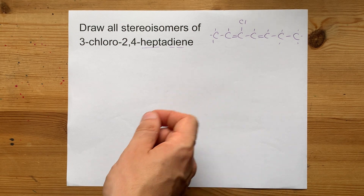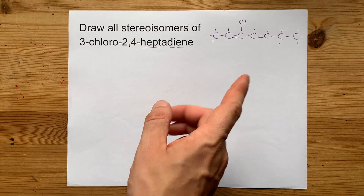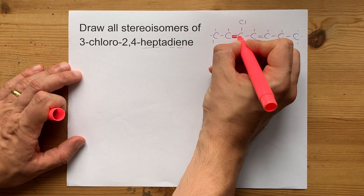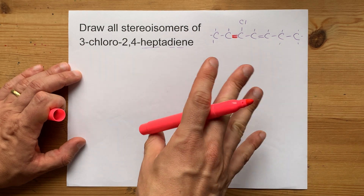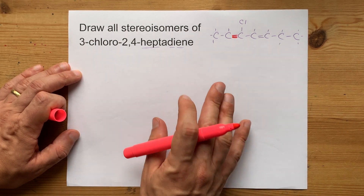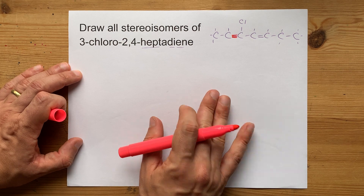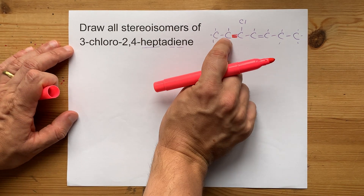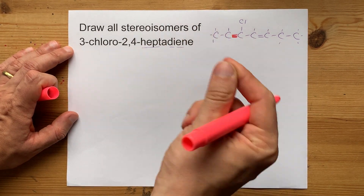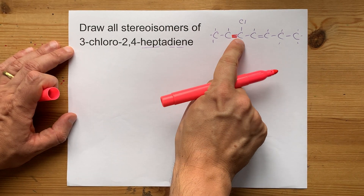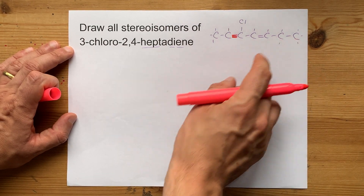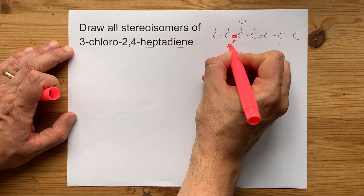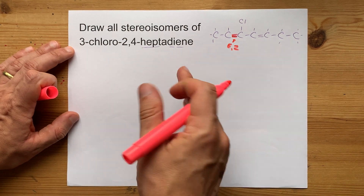There are two places to always be looking. Number one: look for cis-trans isomers at double bonds. We have one double bond here, and in order for cis-trans or E-Z stereoisomerism to happen, the things attached to each of those carbons need to be different on both sides. This carbon has a methyl group and a hydrogen — those are different — and this carbon has a chlorine and a four-carbon chain — those are different. So this bond can either be E or Z.